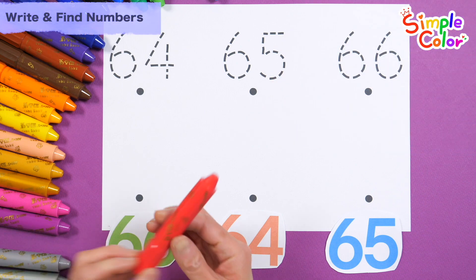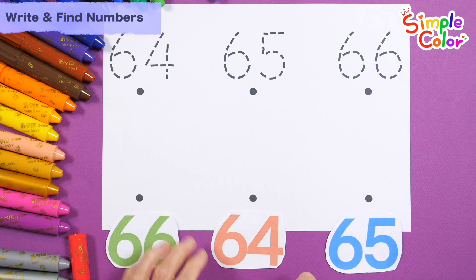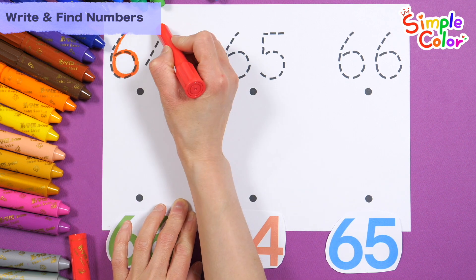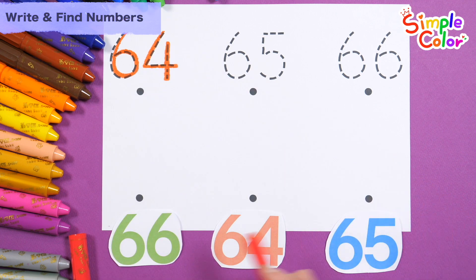Write the numbers in order at the top, find the same numbers at the bottom, and draw a line. How? 64. Where is 64? Well, McDonald had a farm,